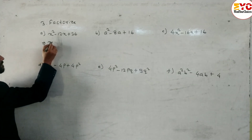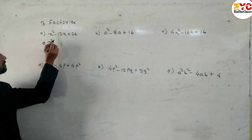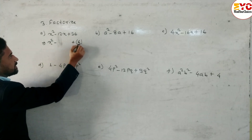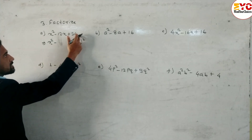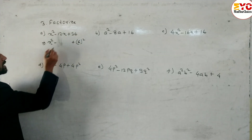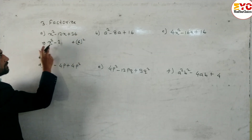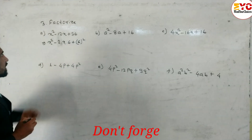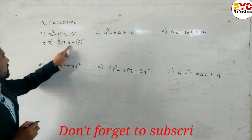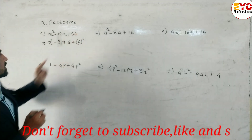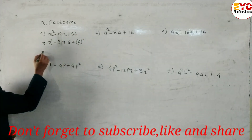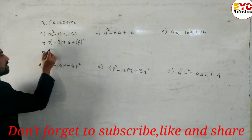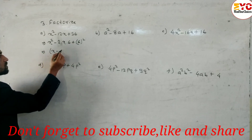For question 3a: x² - 12x + 36. First, convert the first and last terms into perfect squares. In place of 36 we write 6², since 6² = 36. At the middle we write 2ab: a is x and b is 6, so 2 × x × 6 = 12x. And 6² = 36.